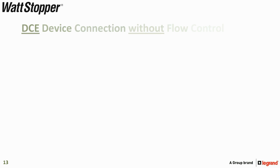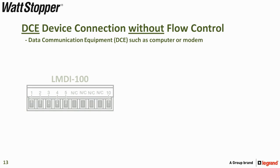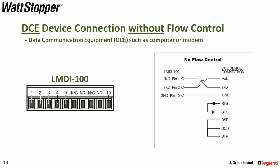The final device type is a DCE device connection without flow control. Wire as follows, using pins 1, 2, and 10 of the LMDI100.